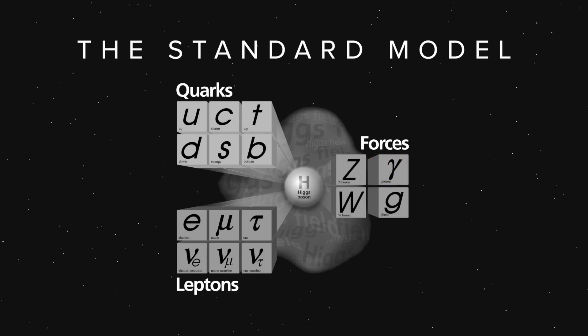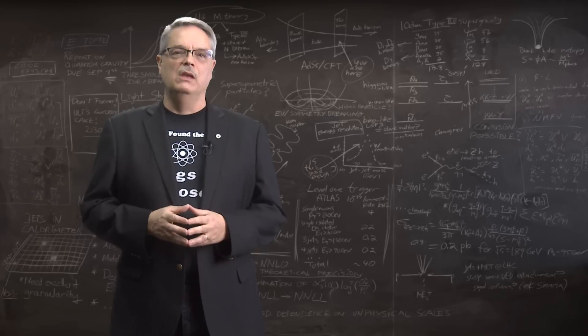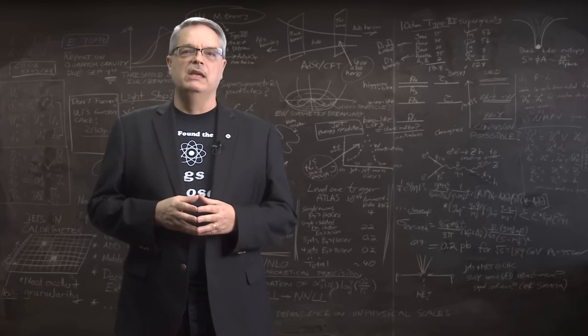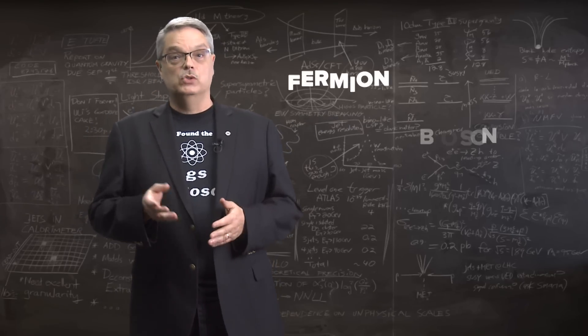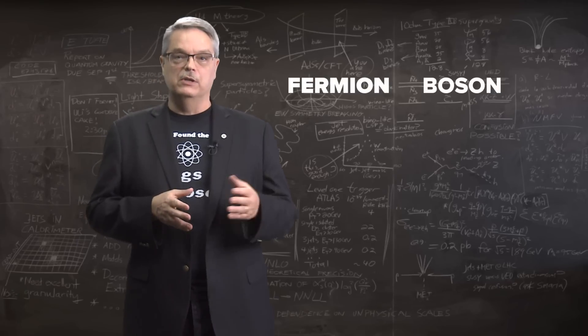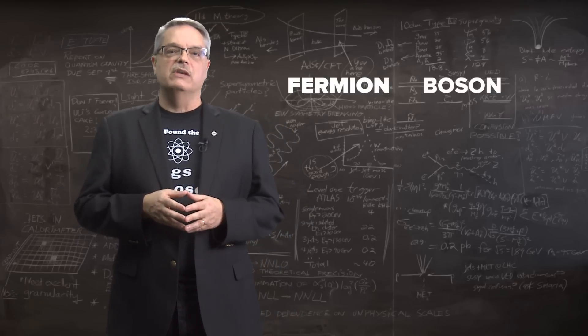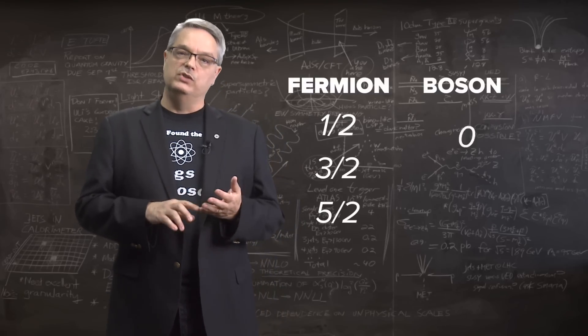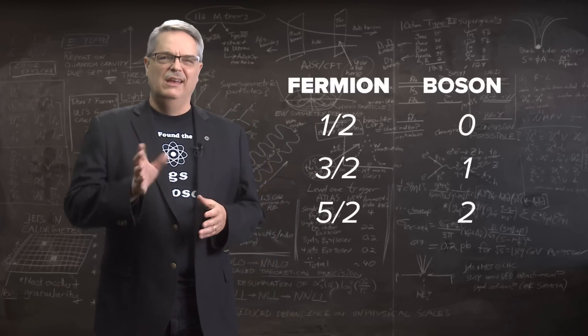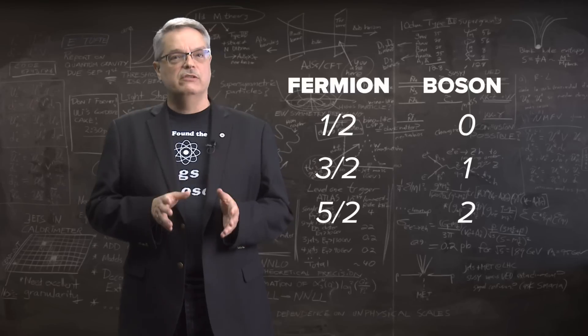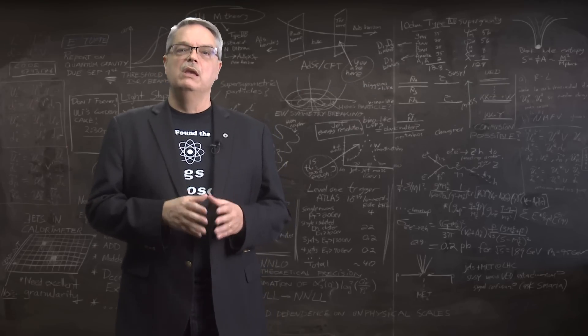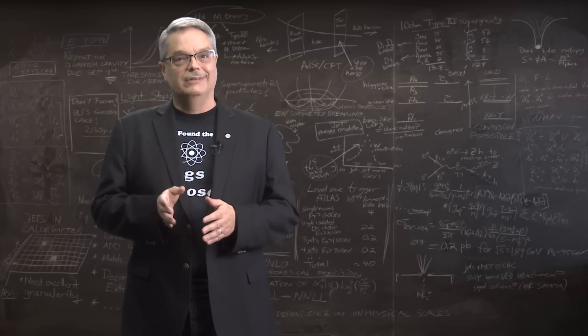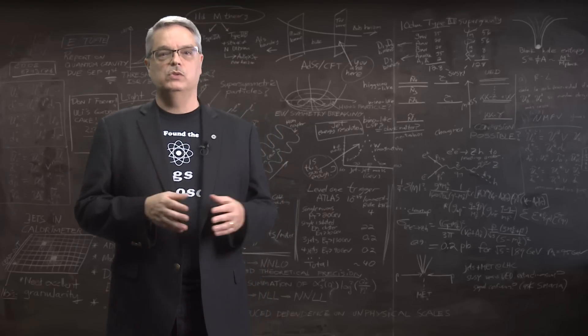But there are other particles in the standard model, specifically the quarks and leptons, which are the particles that actually make up matter. Quarks and leptons are fermions, not bosons. The difference between a fermion and a boson is that fermions have a different amount of spin compared to bosons. The fermions have a spin of a half, three halves, five halves, and so on, while the bosons have a spin of zero, one, two, etc. I'll talk more about the significance of the differences of fermions and bosons in a future video, but the bottom line is that they are different and the original Higgs theory only gave masses to bosons.